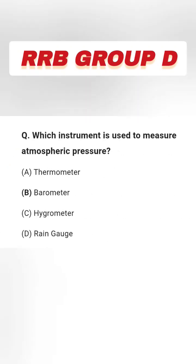Next question: Which instrument is used to measure atmospheric pressure? Options: thermometer, barometer, hygrometer, rain gauge. The right answer is option B, barometer.